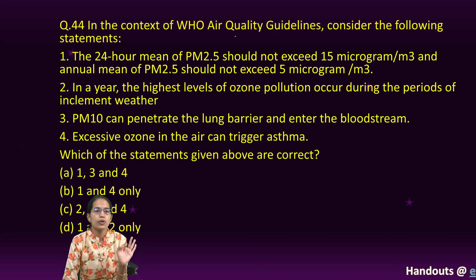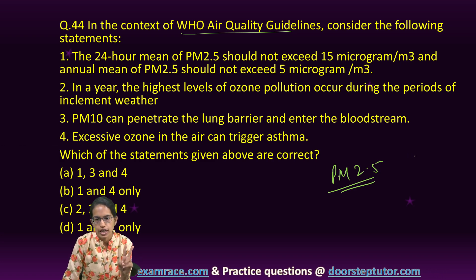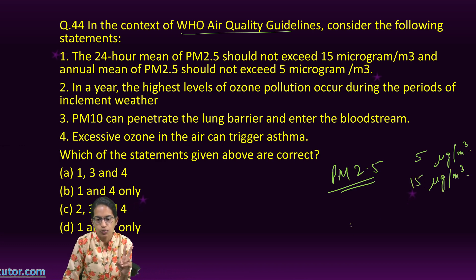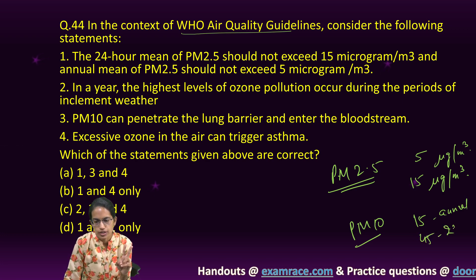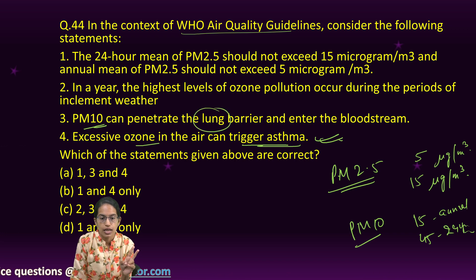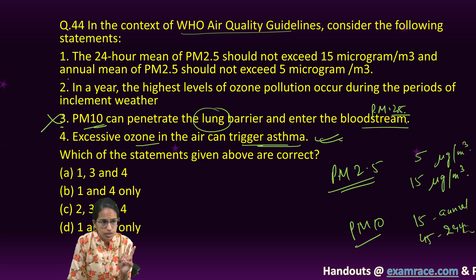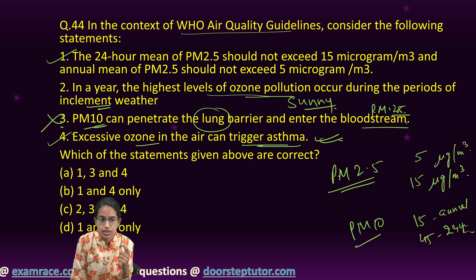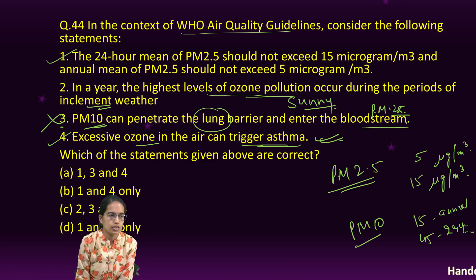WHO air quality guidelines: for PM2.5, the annual mean should not exceed 5 micrograms per cubic meter, and the 24-hour mean should not exceed 15. For PM10, the guidelines are 15 for annual mean and 45 for 24-hour mean. Excessive ozone can trigger asthma — correct. PM10 and below can affect the lungs; PM2.5 and below can enter the bloodstream, making statement three incorrect. The highest ozone pollution occurs during sunny weather, not inclement weather. Statements one and four are the right options.